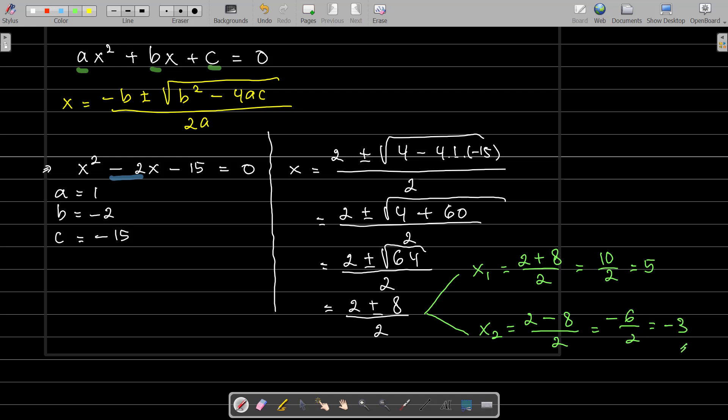So you have that both of them are solutions of this quadratic equation. I can write: the solution of this quadratic equation is -3 or 5. It means when you put x with -3 or you put x with 5, it equals 0.